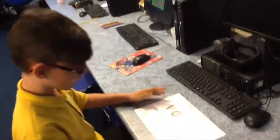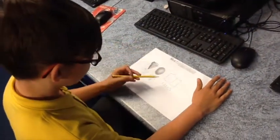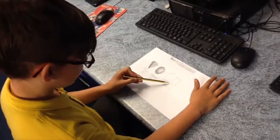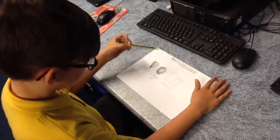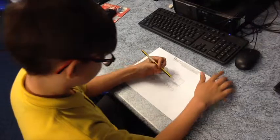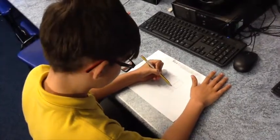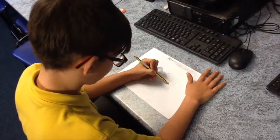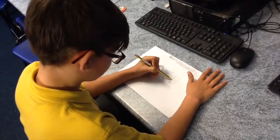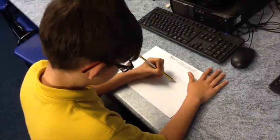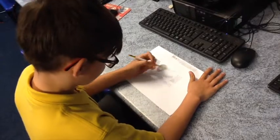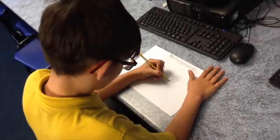and then the furthest side away from the light will be the darkest. So first you need to shade it in lightly, I like to do it diagonally, just roughly do it and then you'll need to make it darker.